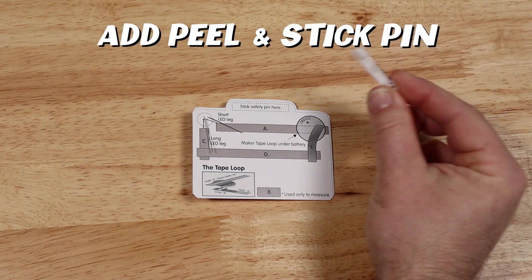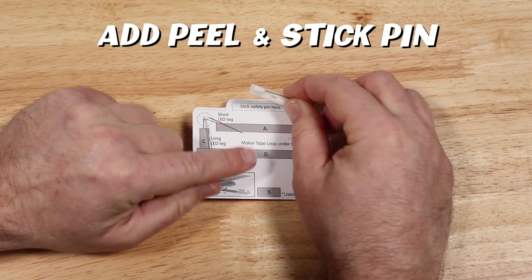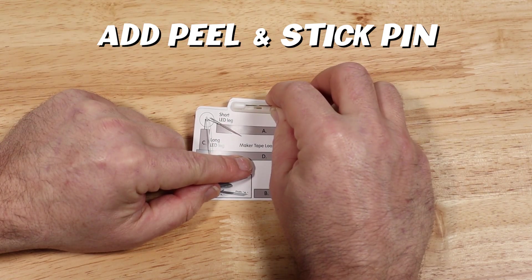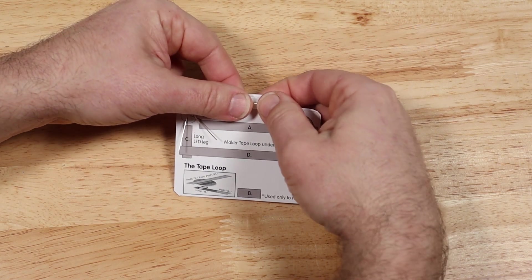Next, we'll add the peel and stick pin. Make sure the pin is closed. Peel off the backer to reveal the adhesive and put the pin in place. Press it down to make sure it's firmly adhered.